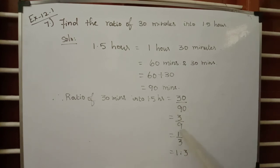This can be written as 1 is to 3 in ratio notation. It's a very simple question - just convert 1.5 hours into minutes, then find the ratio of 30 minutes to 90 minutes. That gives 30 by 90 and finally we get 1 is to 3. Thank you.